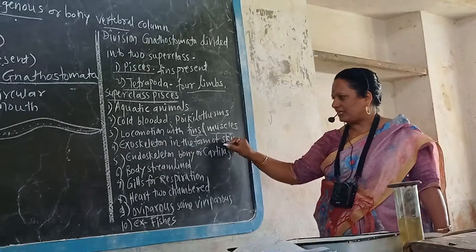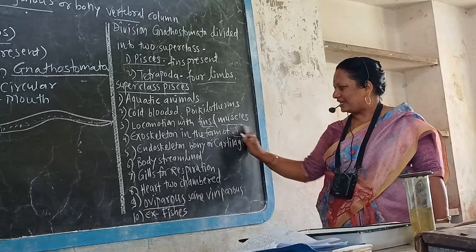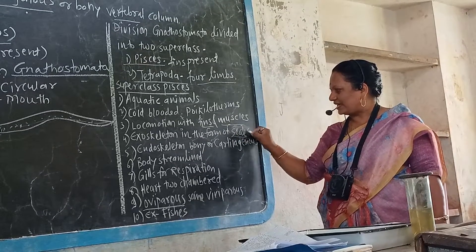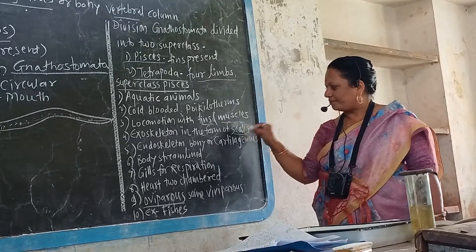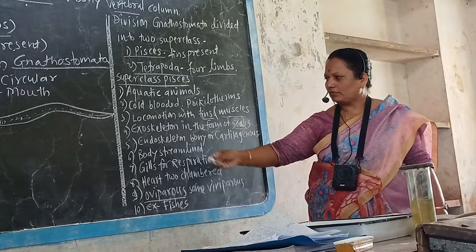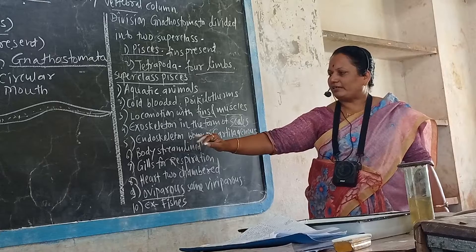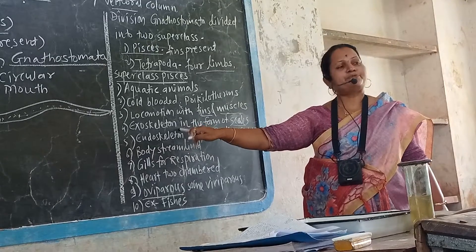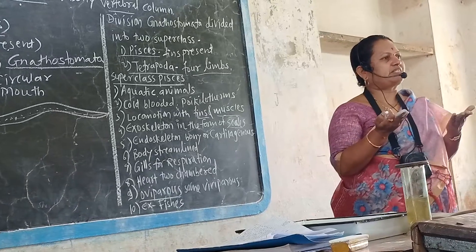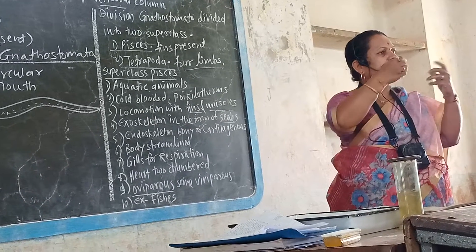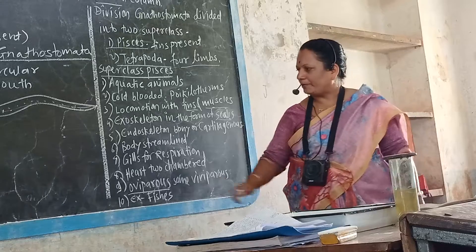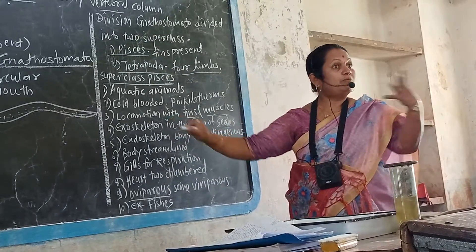Exoskeleton in Pisces is in the form of scales. Exo means present at the outer side of the body, while endo means present inside the body. Examples of exoskeleton in humans include nails and hair, while in cattle the horns serve as exoskeleton.